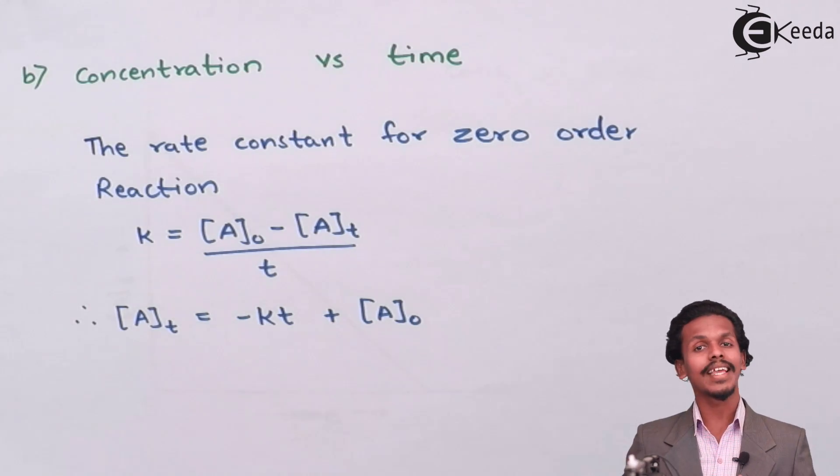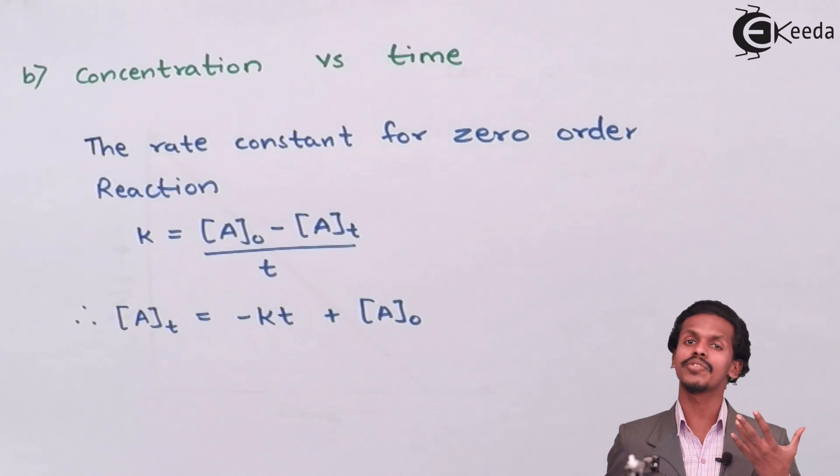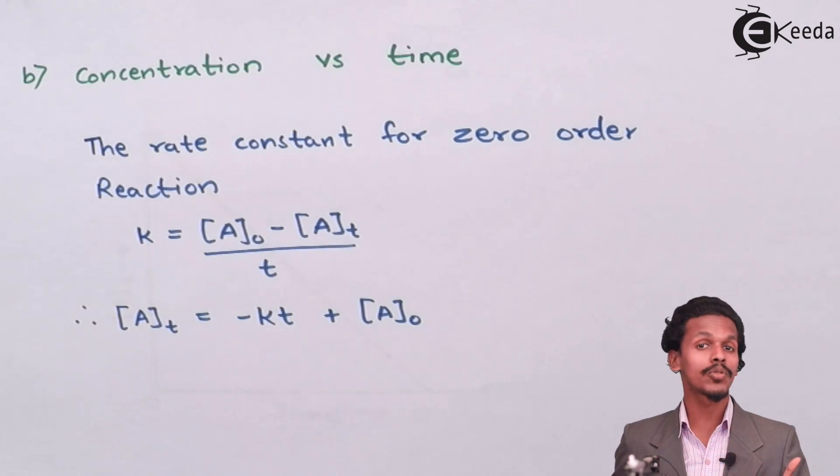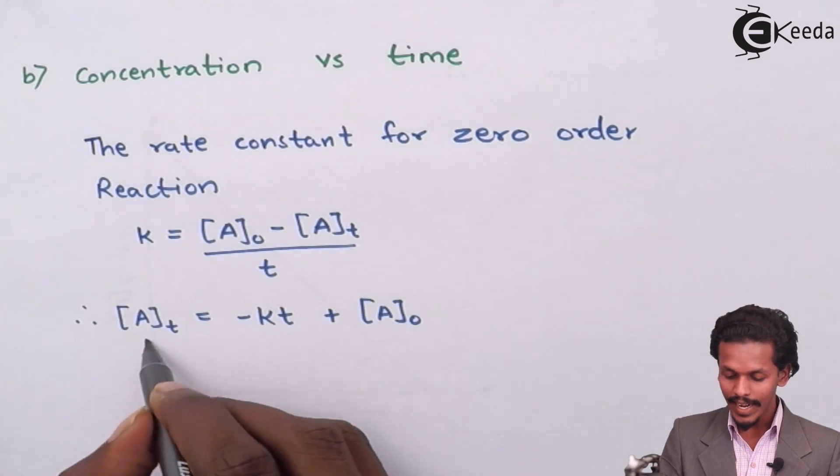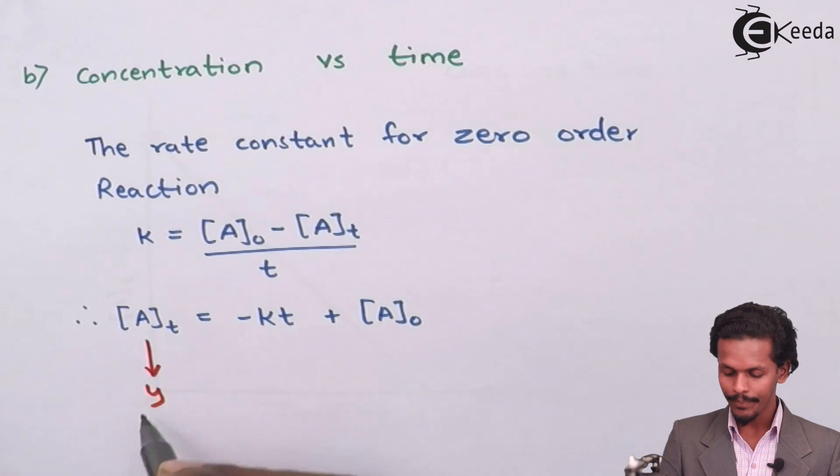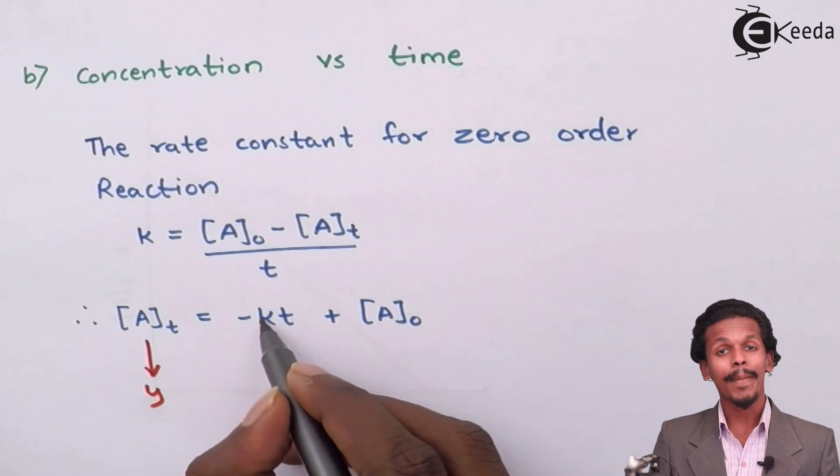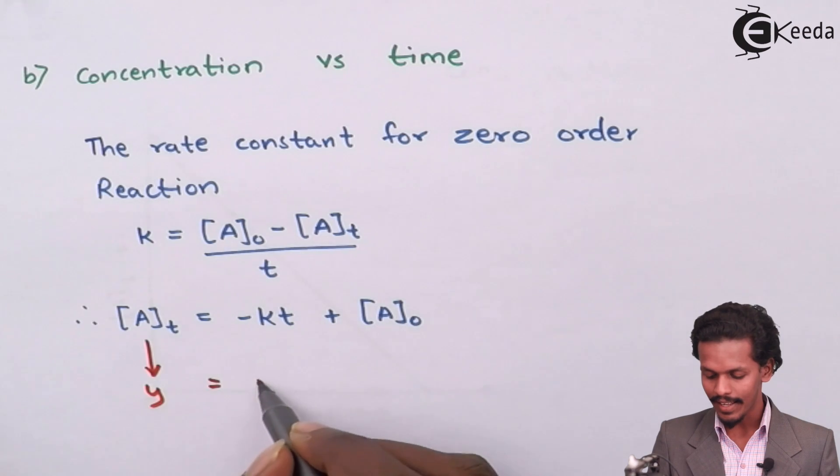This equation is very similar to the straight line equation y equals mx plus c. Therefore, this At acts like y, this minus k acts like m,